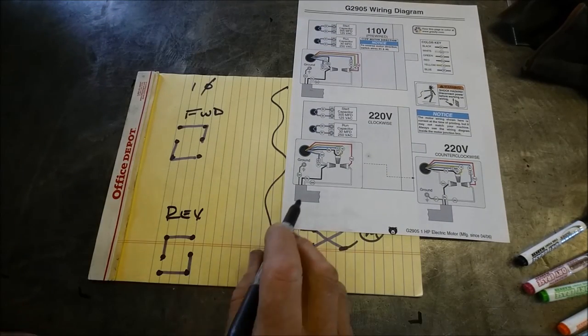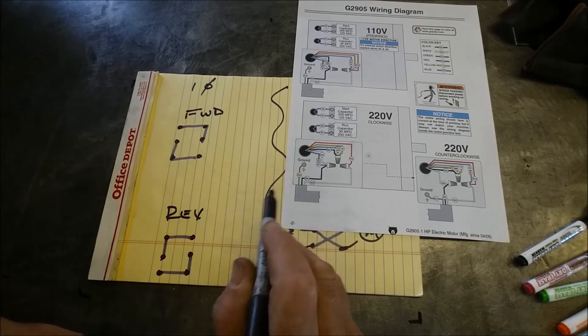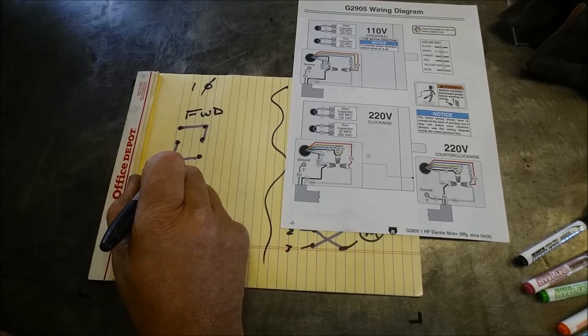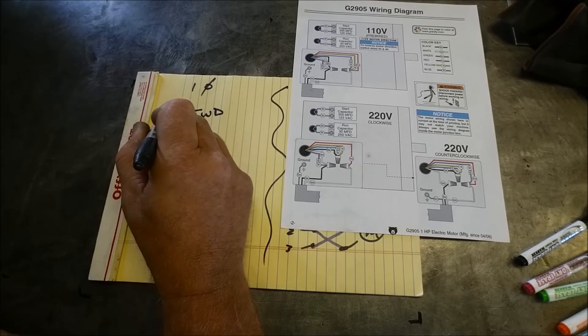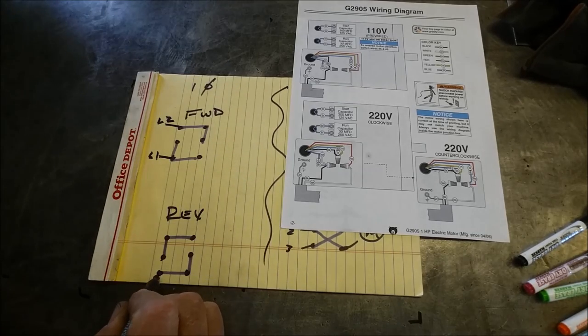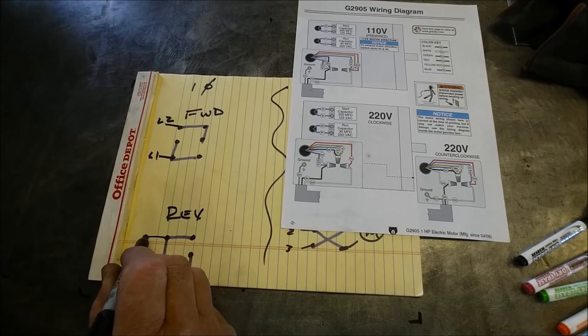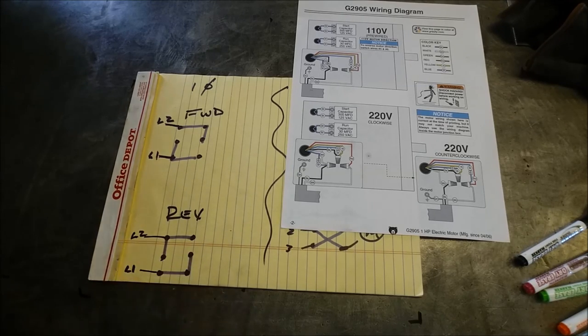Let's sketch that in real quick. We're just going to call these line one and line two. So we're going to bring L1 here and L2 here, and then we're going to bring L1 here and L2 here. Those remain a constant.